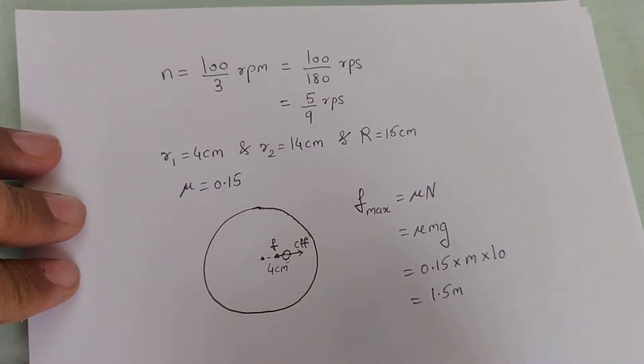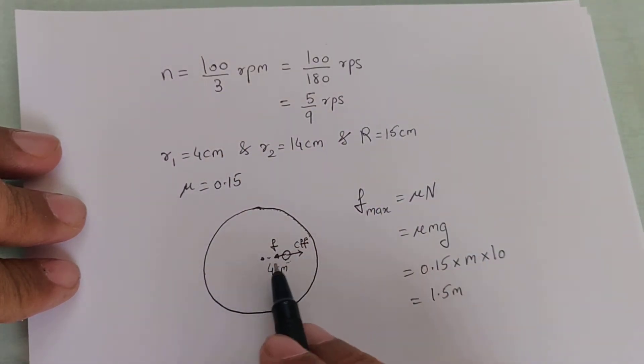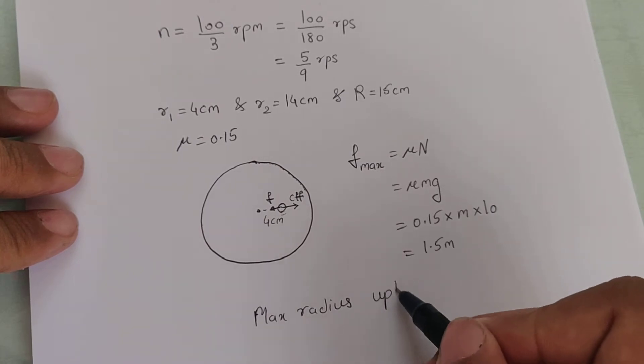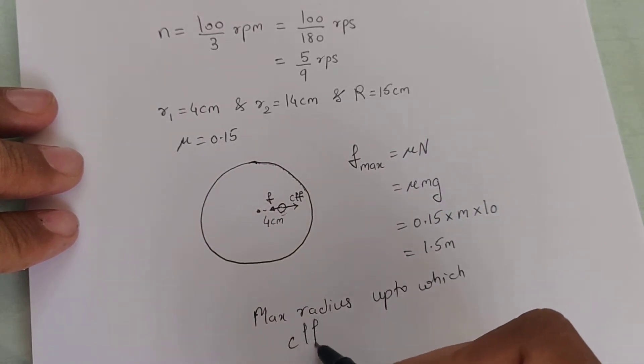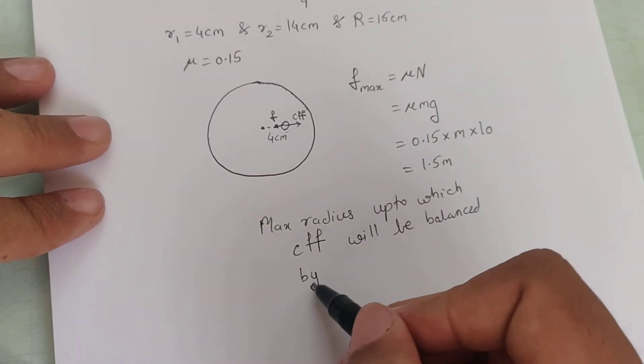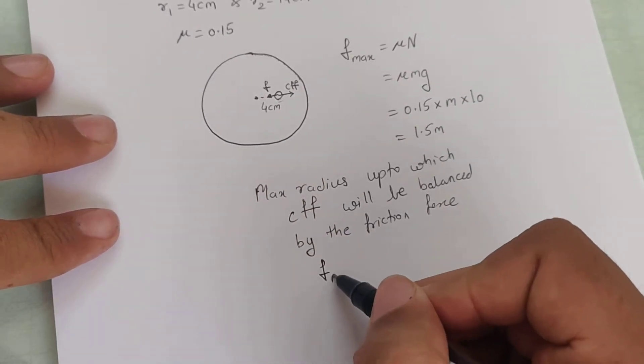Now what we need to understand is they have given us the omega in terms of n which is going to be balanced by the friction force. So if we try to balance that we must find the value of the maximum radius r till which this friction force 1.5m can balance the centrifugal force. So if I assume the maximum radius up to which centrifugal force will be balanced by the friction force, we can calculate it as f max.